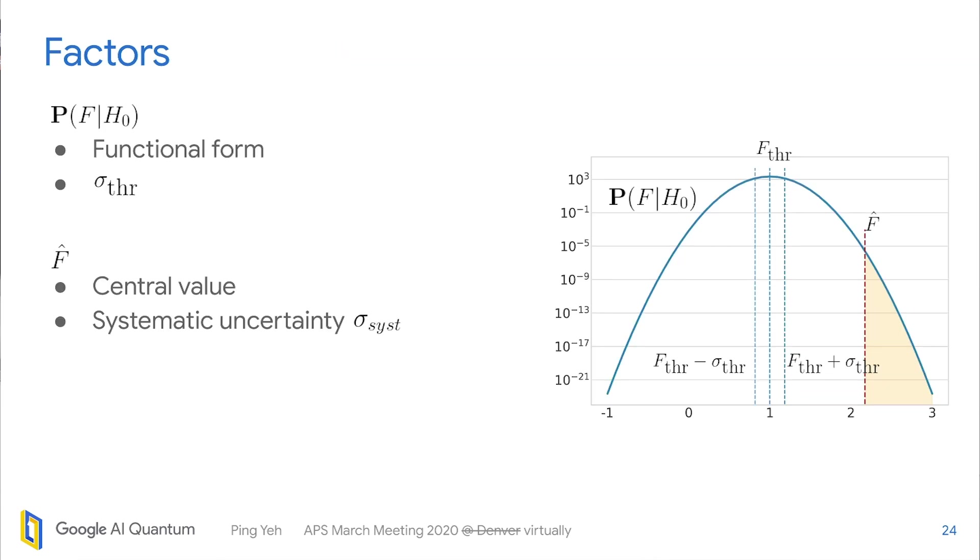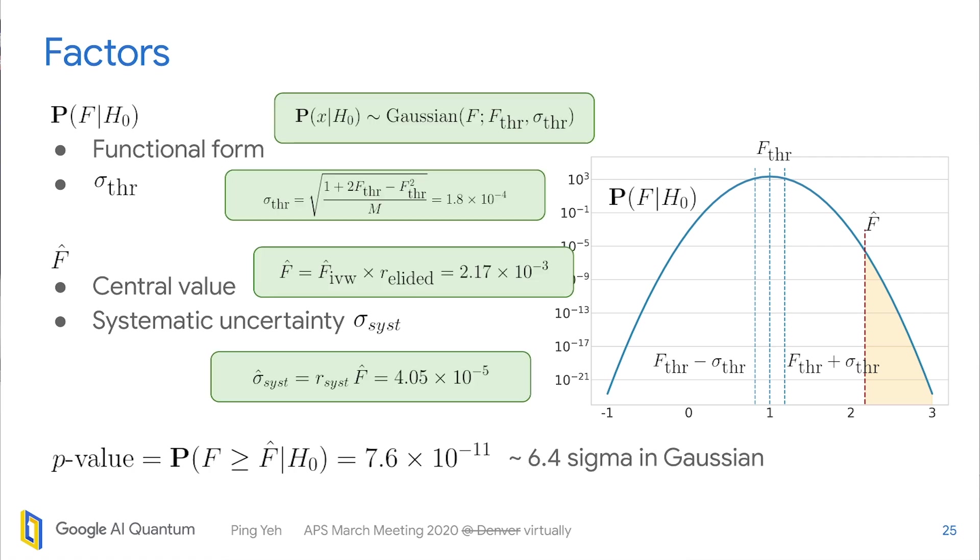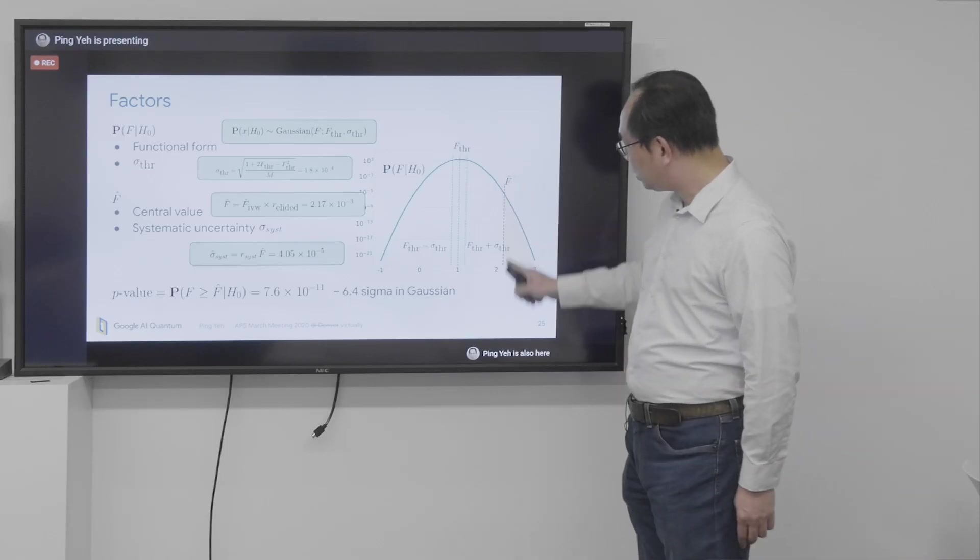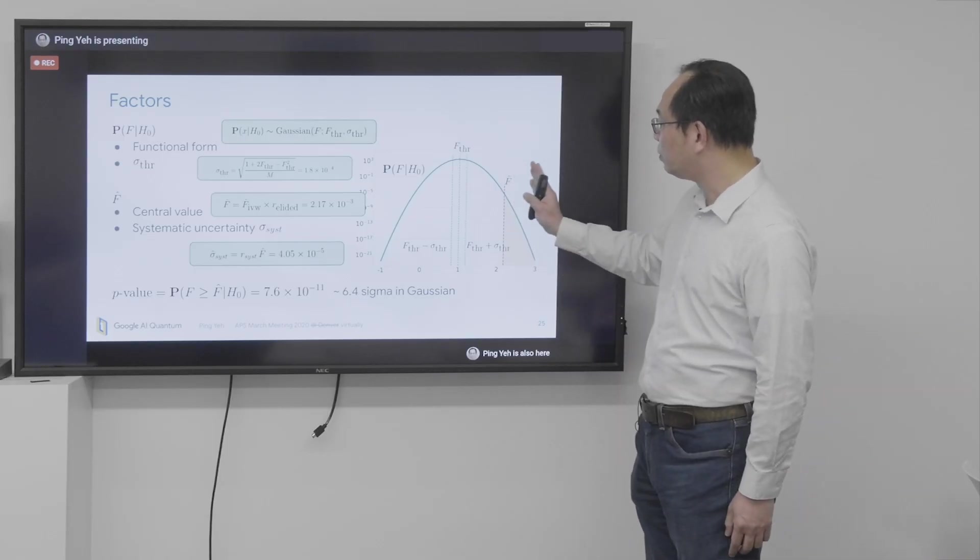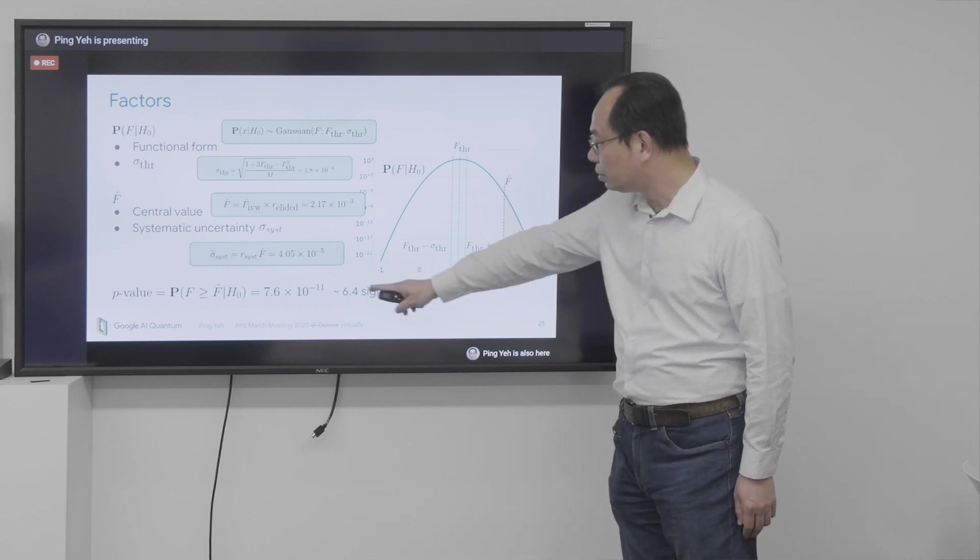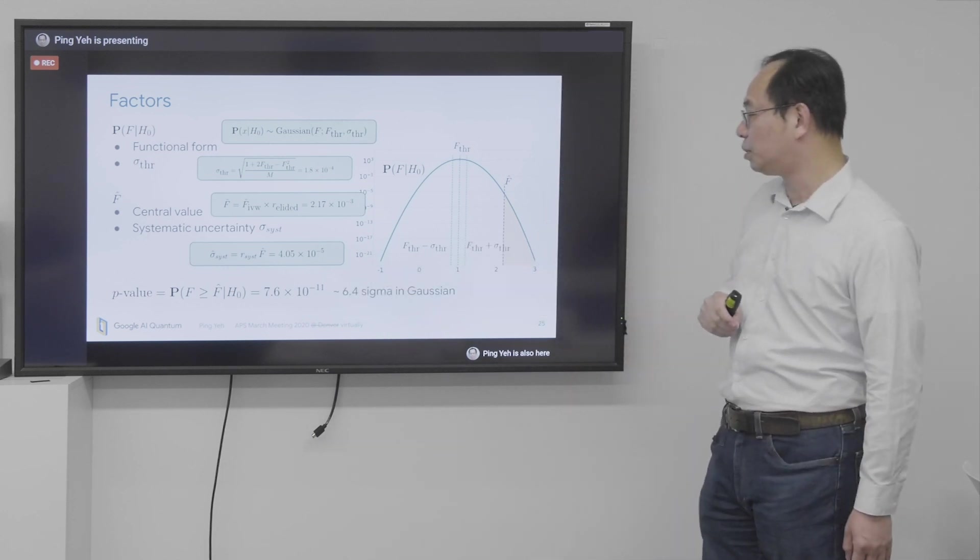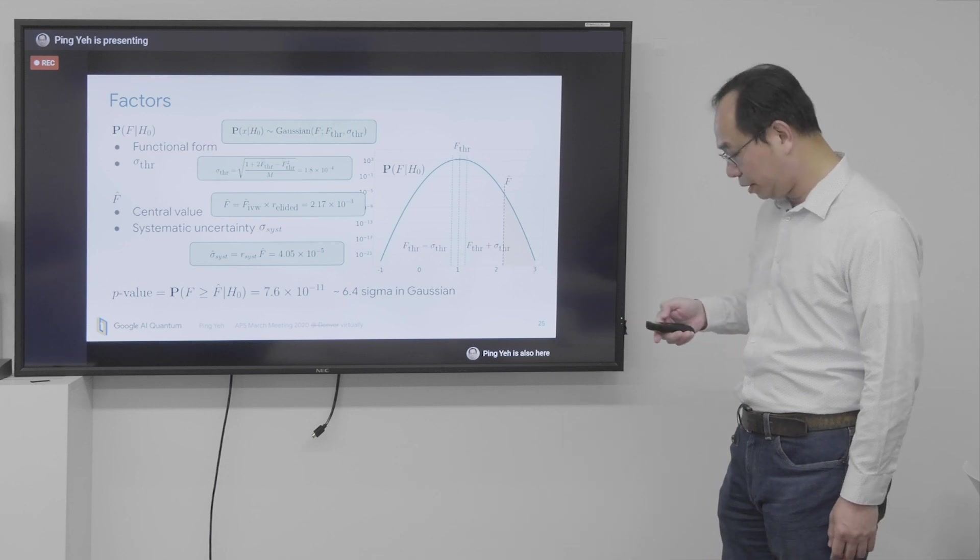So now, coming back to this factor, all the factors for calculating the p-value, we have all of them estimated. So it's straightforward to plug them in to get a p-value. So for this tail probability of F hat, we get a p-value of this number, which corresponds to about 6.4 sigma in Gaussian.